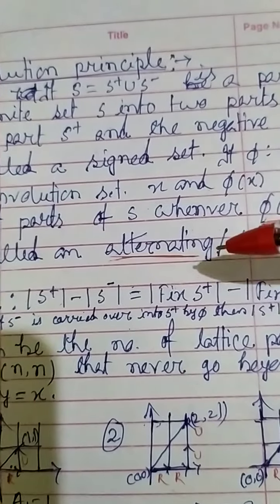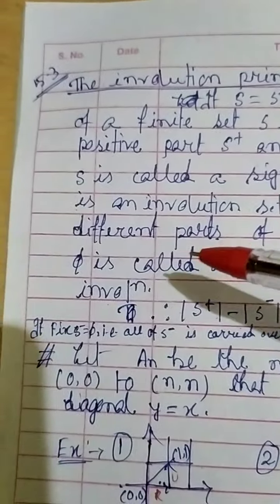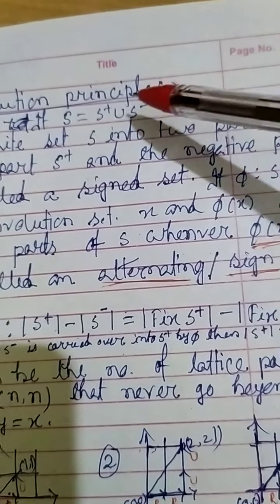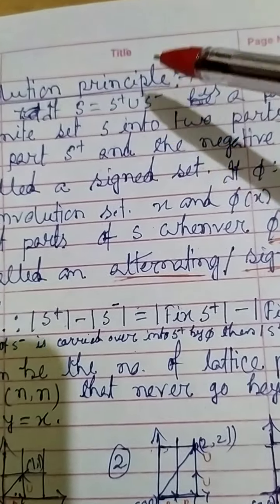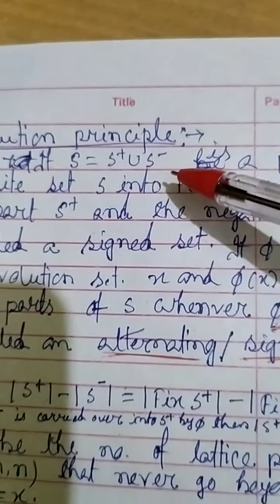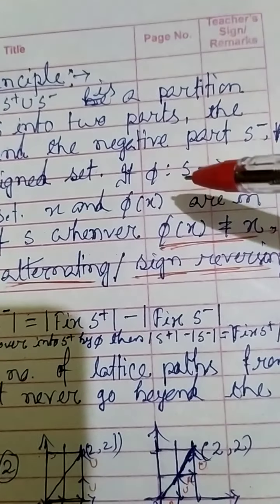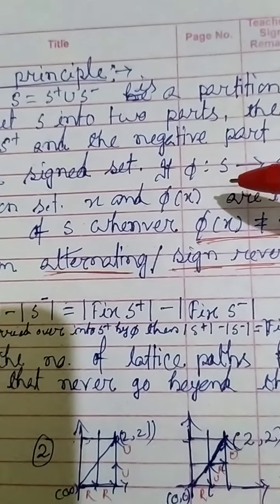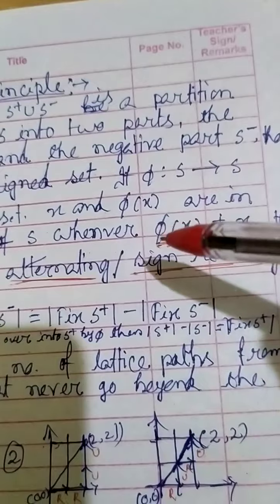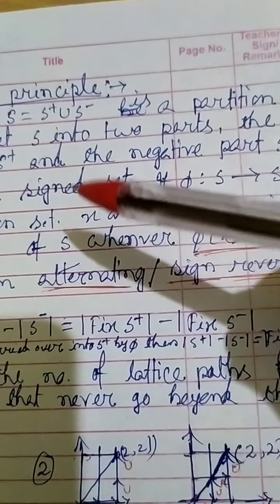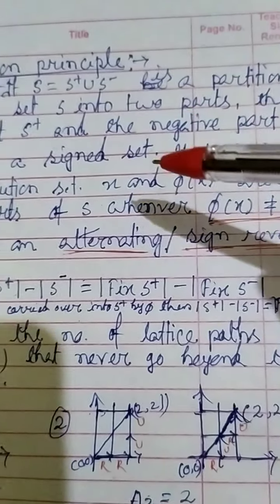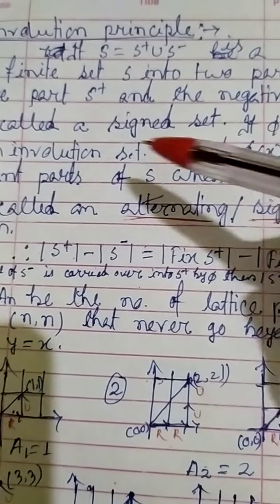To summarize, we need the definition of an alternating or sign-reversing involution. For this we need a sign set — a partition of a finite set into two parts S-positive and S-negative — and an involution φ² = identity such that whenever φ(x) ≠ x, then x and φ(x) are in different parts.